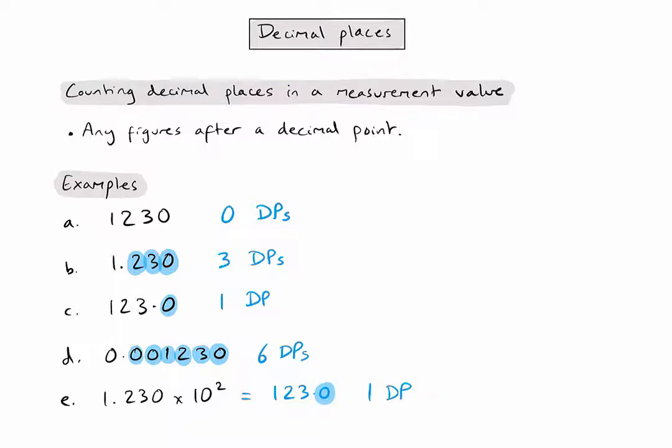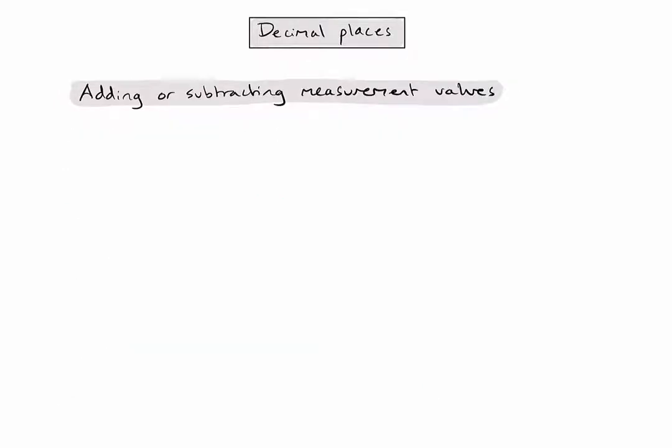Let's now look at how we deal with decimal places when adding or subtracting measurement values. There are two simple steps we need to follow. The first one is to identify the number of decimal places in the measurement values involved.